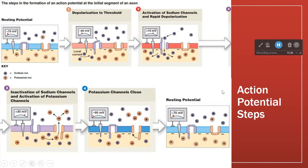Different pictures from a different book, so the numbers change but the pattern is the same. Here we have our cell at rest at minus 70 millivolts, just hanging around doing nothing. The sodium activation gate is closed, the inactivation gate is open, and the potassium activation gate is closed — everything is status quo.